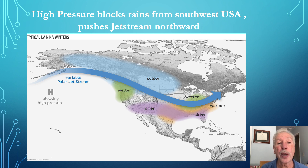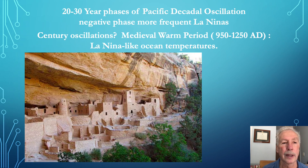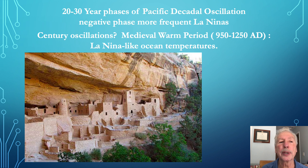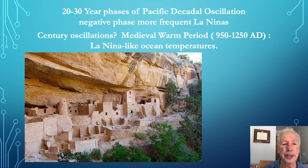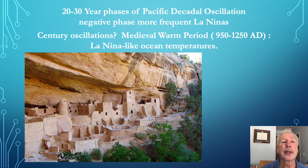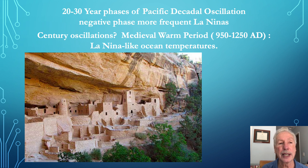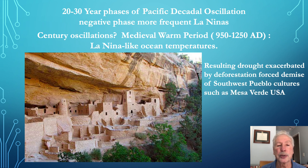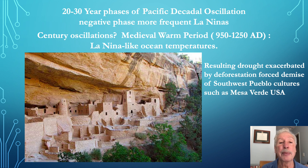During La Niña, there are extensive droughts throughout the western United States, as California has been experiencing recently. La Niña events cause positive feedbacks that help generate a 20 to 30 year Pacific Decadal Oscillation negative phase with more frequent La Niñas, and there may also be century-long oscillations. During the medieval warm period between 950 and 1250 AD, coral evidence shows the Pacific exhibited more La Niña-like temperatures, causing extensive droughts in the southwest United States. The resulting droughts, exacerbated by deforestation, forced the demise of the southwest Pueblo cultures, as the Mesa Verde ruins testify.